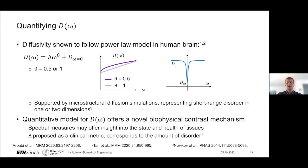As a bigger picture, the significance of having this model is that it offers a novel biophysical contrast mechanism. We now have additional spectral measures which may allow us to distinguish tissues or assess their health. In particular, the parameter lambda in the diffusion dispersion model has been proposed as a clinical metric, where differences in lambda would correspond to differences in the amount of disorder.